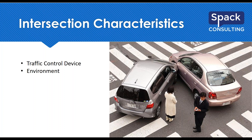Different roadway environments have different characteristics which affect how people drive and where crashes occur. We're going to see more intersection crashes in an urban area than a rural area, as there are more intersections and more traffic. There was a question about when it's appropriate to use crash frequency or crash density versus crash rate. What we typically see is: if you have a low-volume intersection, one or two crashes can really drive the crash rate up, even though it's only one or two crashes — that's a random event.